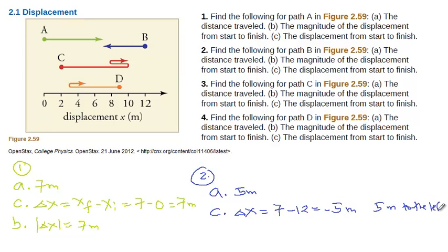Or you can call it like 5 meters to the left. Again, displacement is a vector quantity. It needs a magnitude, 5 meters, and a direction to the left. Or it's also sufficient to put a negative. Negative means towards the left in this case. For part B again, the magnitude of the displacement will just be the absolute value of the negative 5 meters, or it will just be 5 meters.